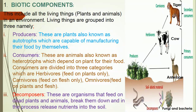Producers are plants, also known as autotrophs. They are capable of manufacturing their own food by the process of photosynthesis. Consumers are animals, also known as heterotrophs. They cannot manufacture their own food, so they depend on plants. Consumers are divided into three categories: herbivores, which feed on plants directly like cows, goats, and sheep; carnivores, which feed on flesh like tigers, lions, cheetahs, and hyenas; and omnivores, which feed on both plants and animals — examples include humans, pigs, bears, and foxes.